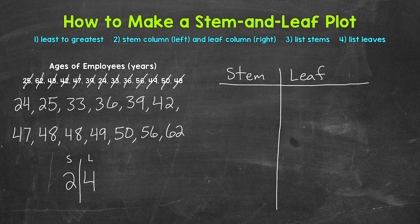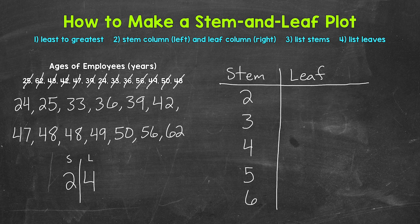We are splitting the values — the ages. Let's list our stems, and we need to go in order here. So 2, 3, 4, 5, 6. So the 20s, the 30s, the 40s, the 50s, and the 60s. Those stems represent the tens digits. We went from the lowest tens digit of 2 all the way to the highest tens digit of 6 and included everything in between.